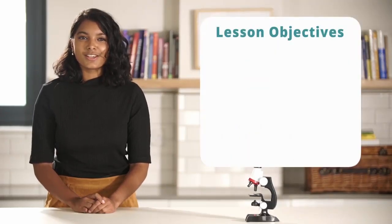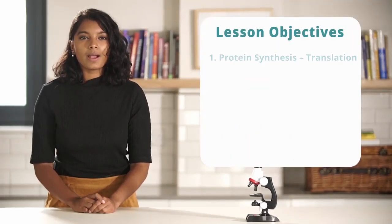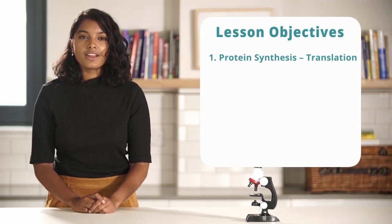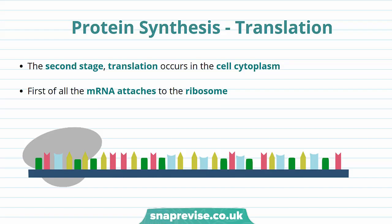Hi guys. In this video we'll be talking about protein synthesis, translation, and finally a summary. In our video on transcription we talked about the fact that protein synthesis has two stages. Transcription, the first stage, happens in the cell nucleus. The second stage, translation, occurs in the cell cytoplasm.